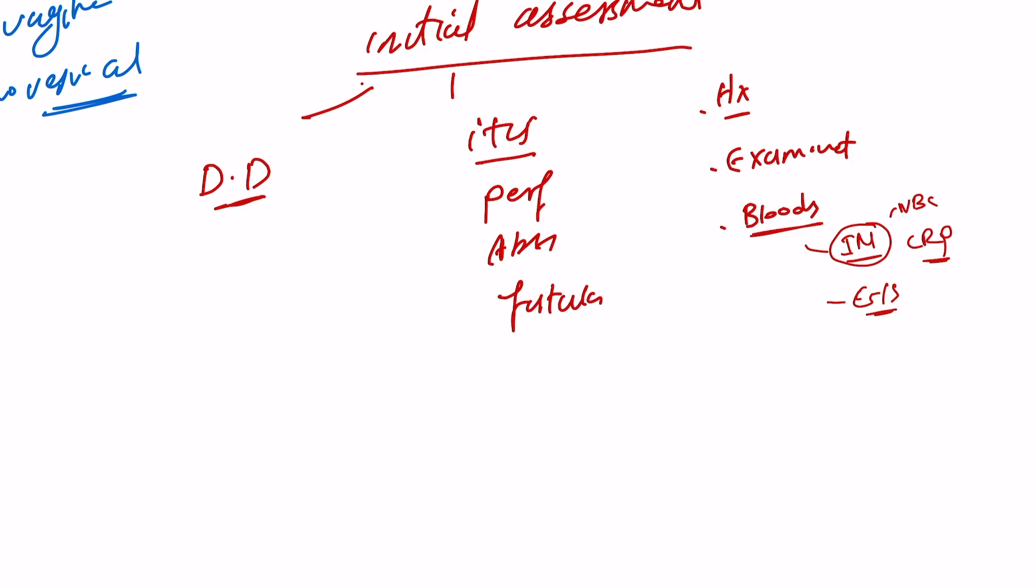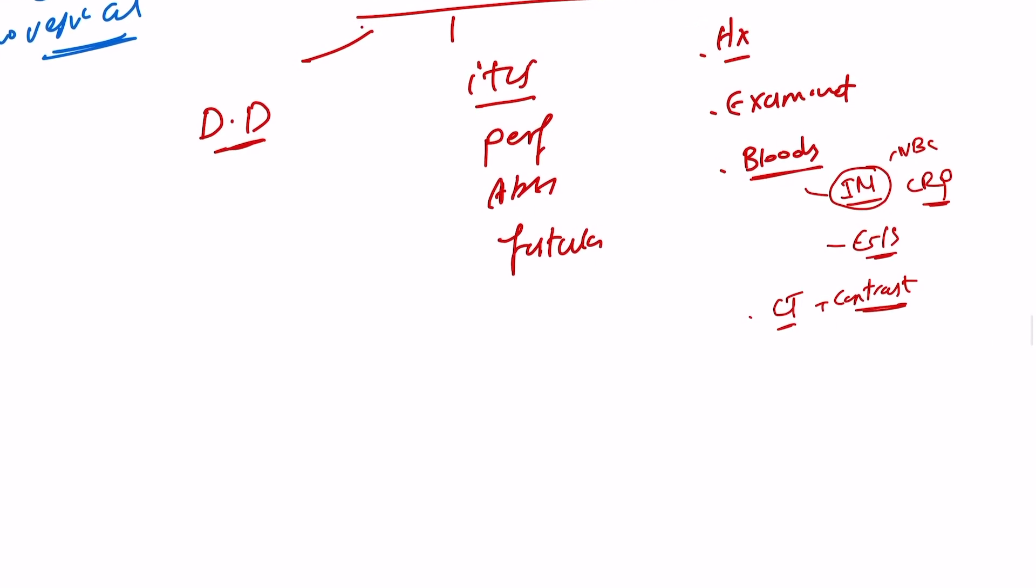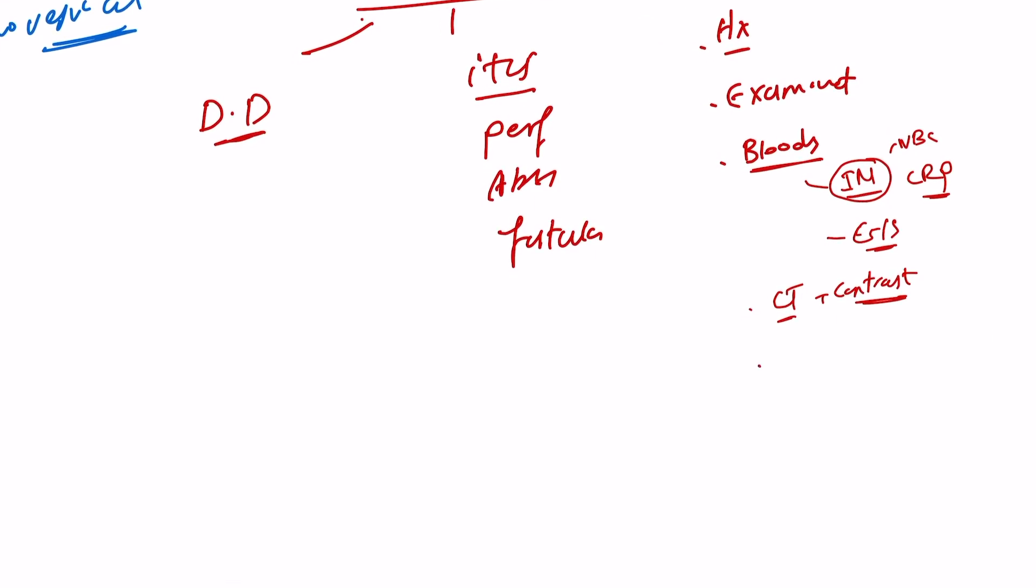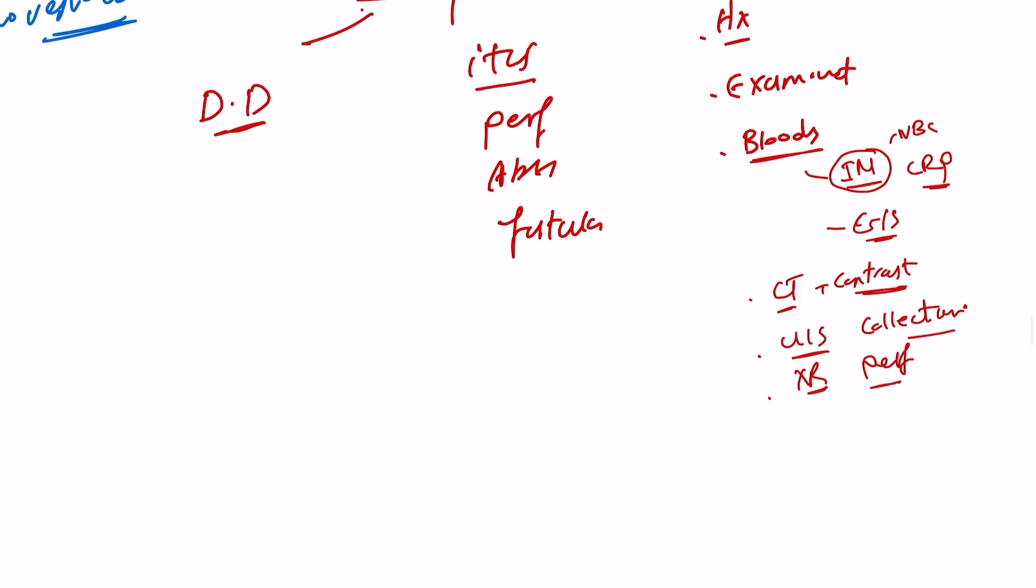Moving forward, as well, after the bloods, CT scan with contrast could be very important to diagnose the diverticula, and also rule out cancer. However, you can do an ultrasound if you're suspecting any collection or pelvic collection, if CT scan is not available. You can even do an x-ray scan if you're suspecting perforation. X-ray could be helpful in determining the air under the diaphragm. But the CT contrast remains the gold standard for diagnosis.